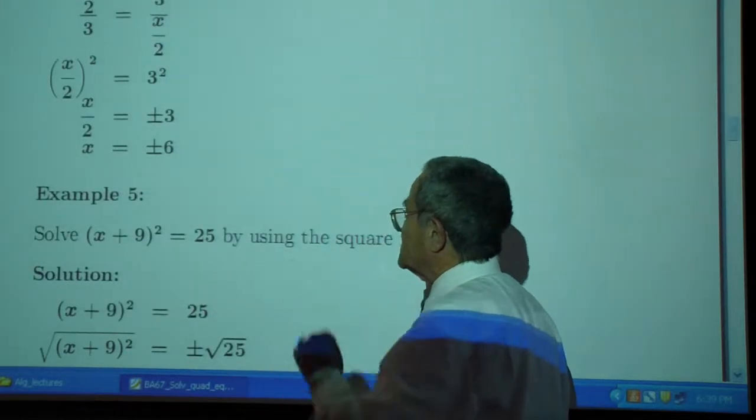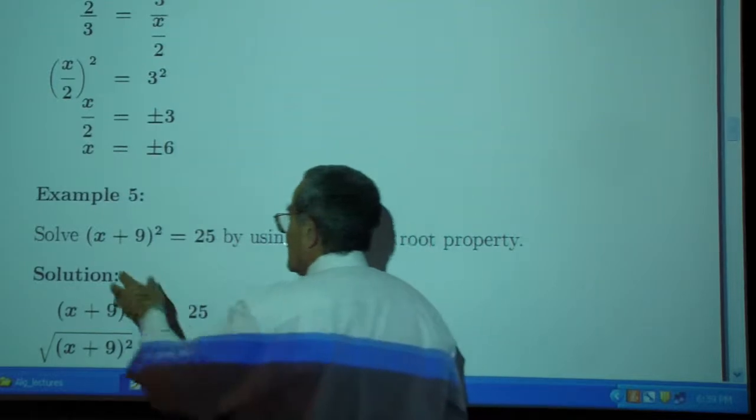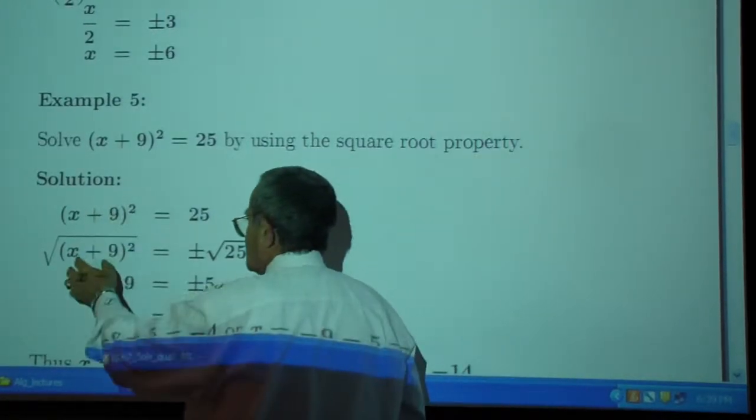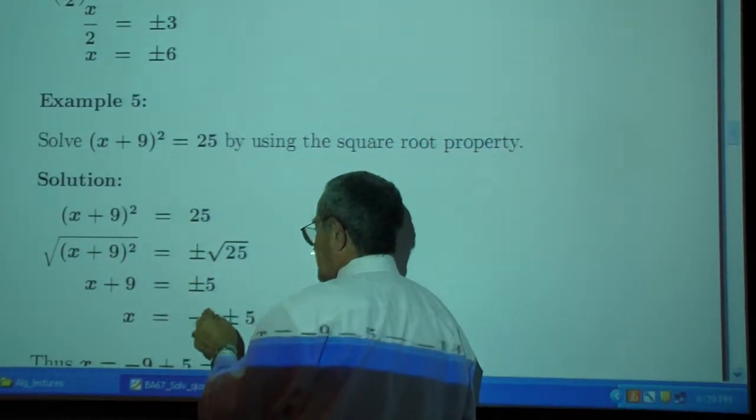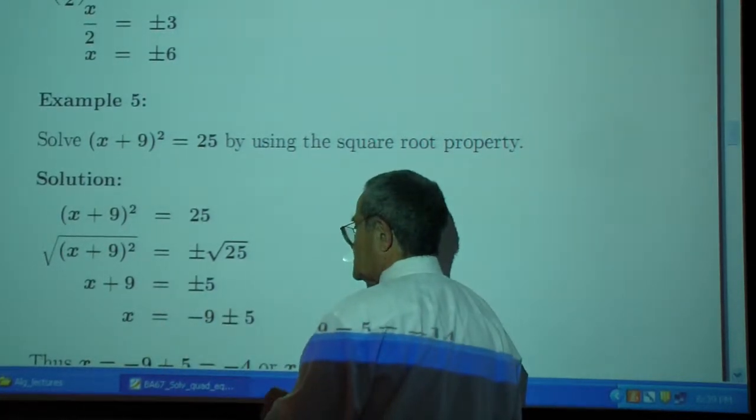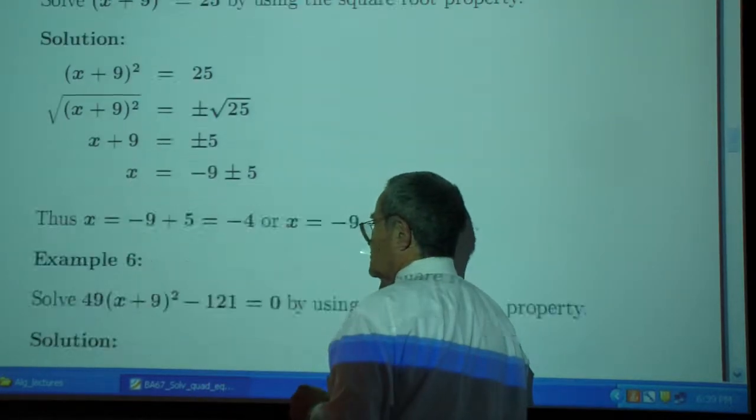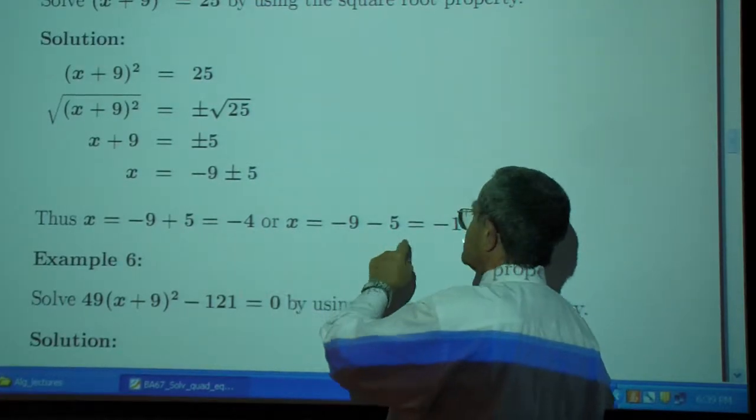Example 5. That is the real square root property that I want to show you. You have quantity squared, which is quantity squared. Take the square root of the left, you just get x plus 9. Take the square root of the right, you get 5. Don't forget plus or minus. Subtract 9 from both sides. Your answer is x minus 9 plus or minus square root of 5. Both of these are solutions.